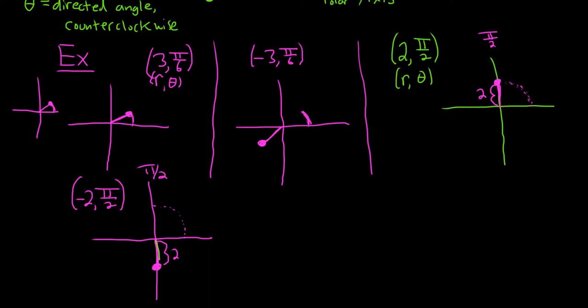So that would be your polar coordinate down here, because first you travel π/2 and it's negative, so you go the other way. Whereas in this example up here, it was positive, and so you go the same way.